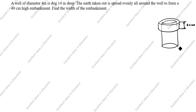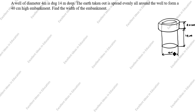What is the well height? The well depth is 14 meter. What is the diameter of the well? Diameter is given as 4 meter, so the radius is 2 meter. This radius is also 2 meter. What do we need to find? The width of the embankment — this width we need to find.